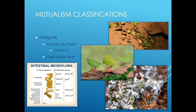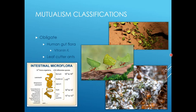Leafcutter ants are another example of obligate mutualism. The ants go out into rainforests, cut down leaves, bring them back to their nest, chew them into a pulp and stick them on a fungus colony they grow. That fungus colony is the only food the ants will eat, and the fungus can only grow in the presence of leafcutter ants. Without either player, both of them go away — these are obligate mutualisms.